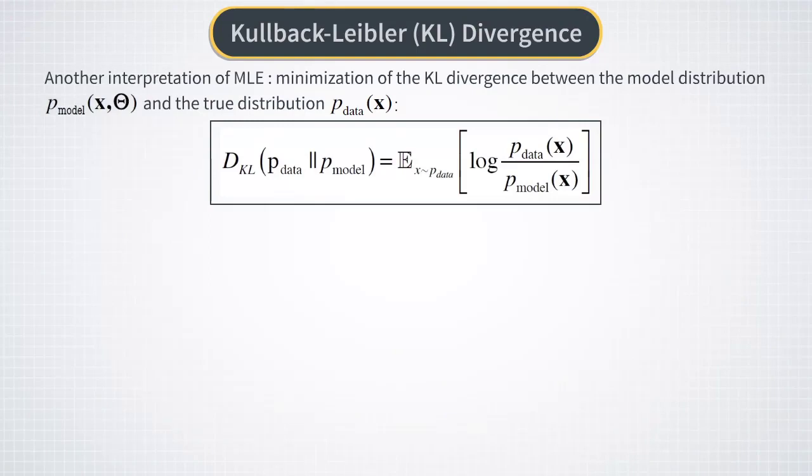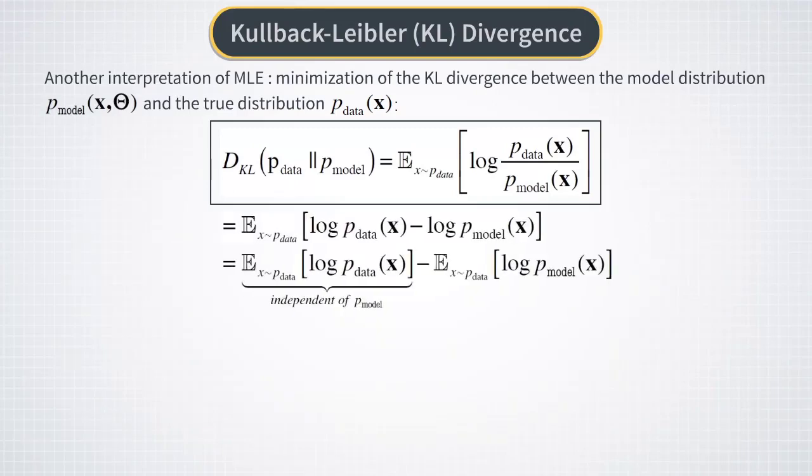Now, note that this is non-symmetric. If you swap P_data and P_model here, you will get an entirely different expression. Now, let's continue with the formula for the KL divergence. Let's write the logarithm of the ratio as a difference of two logarithms. Now, note that the first term here depends only on P_data and not on P_model. The negative of this term is called the entropy of the data distribution, and it measures the amount of randomness in the data. The more randomness in the data, the higher the entropy of the distribution. However, this term is irrelevant for optimization of theta as it doesn't depend on theta, and so we can drop it. Now, replacing the final expression and expectation with an empirical mean, we get this formula.